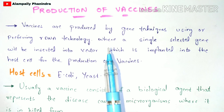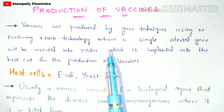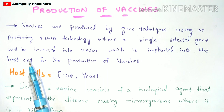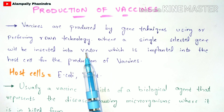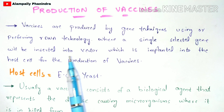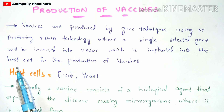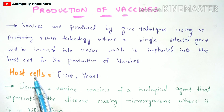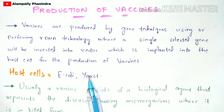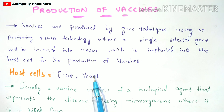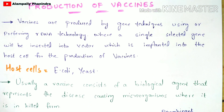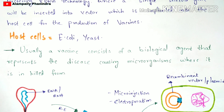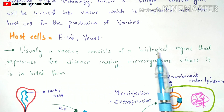These vectors are nothing but the plasmids which will be implanted into the host cell. Host cells can include E. coli cells as well as yeast cells, but the most preferred host cells for the production of vaccines are yeast cells — yeast cells are most widely used.